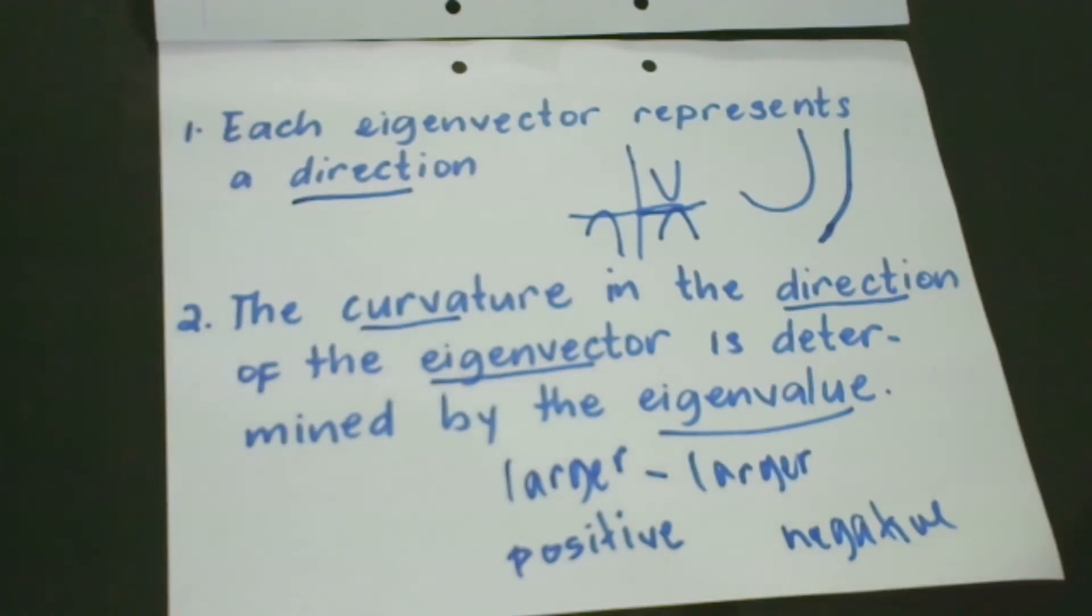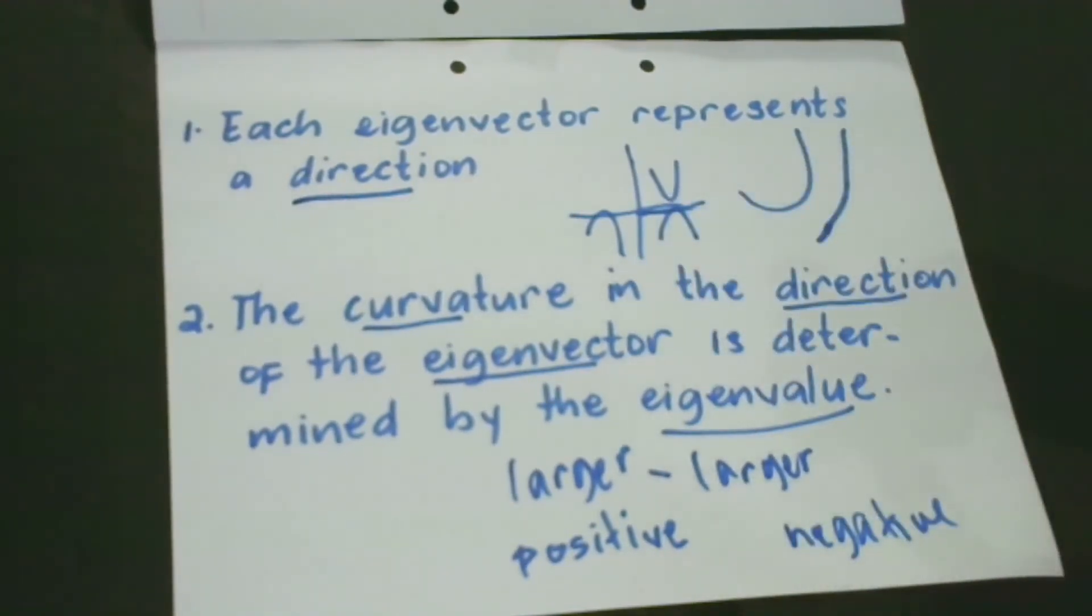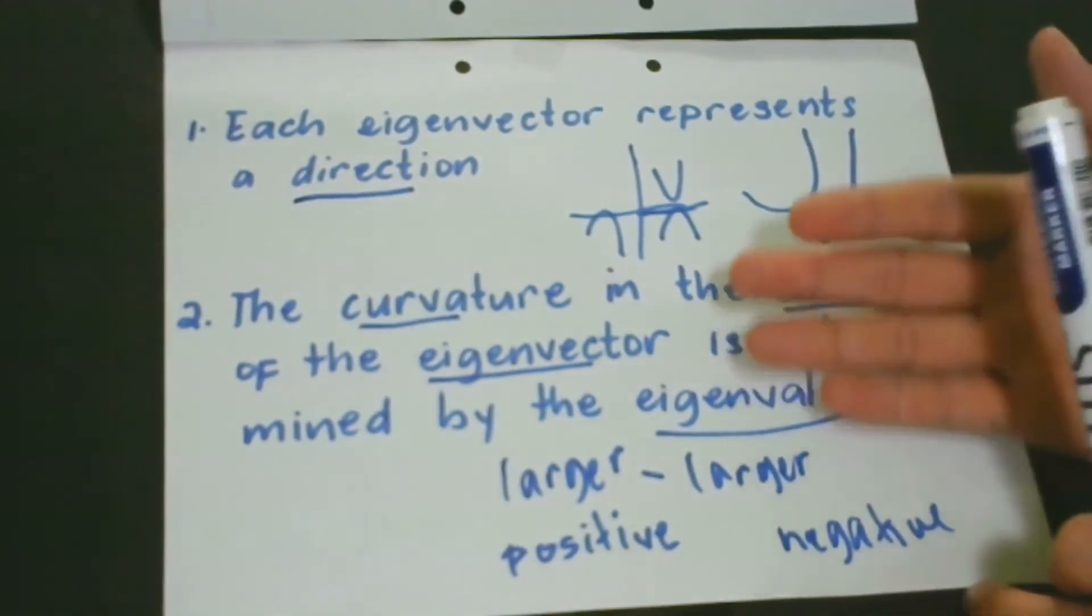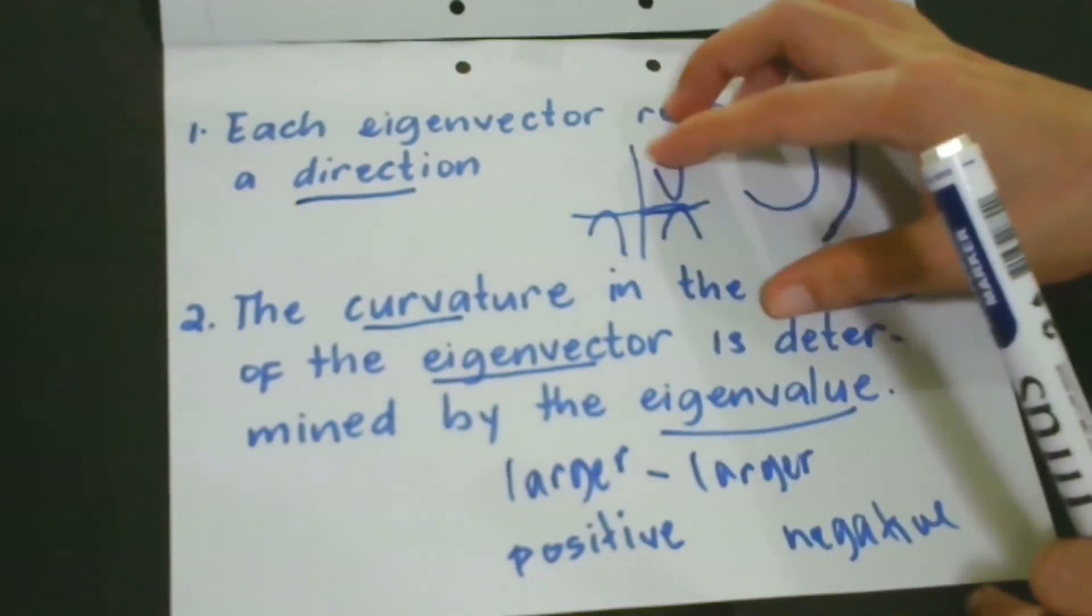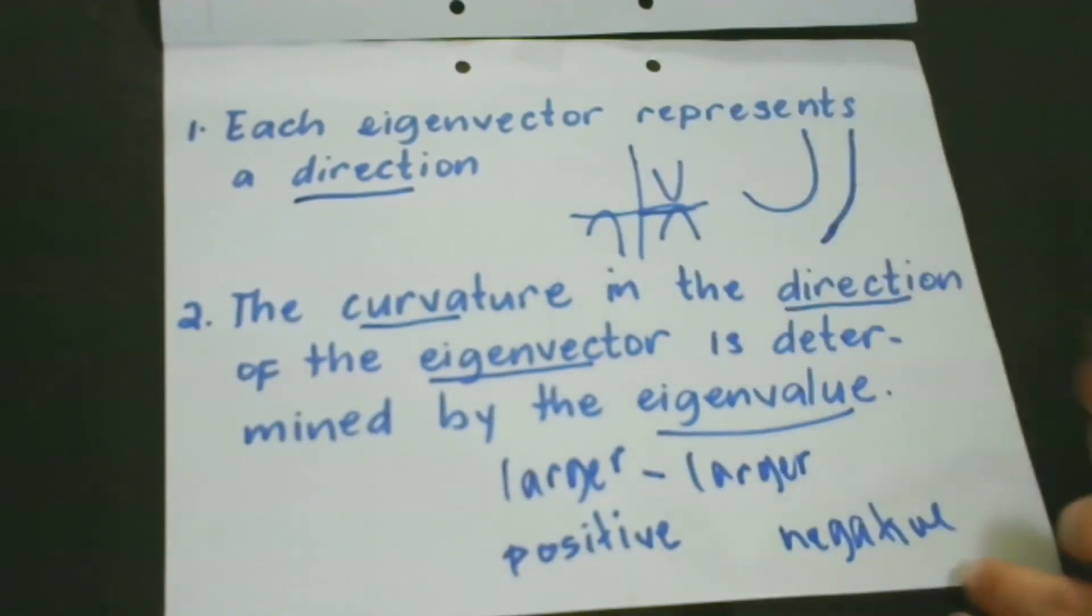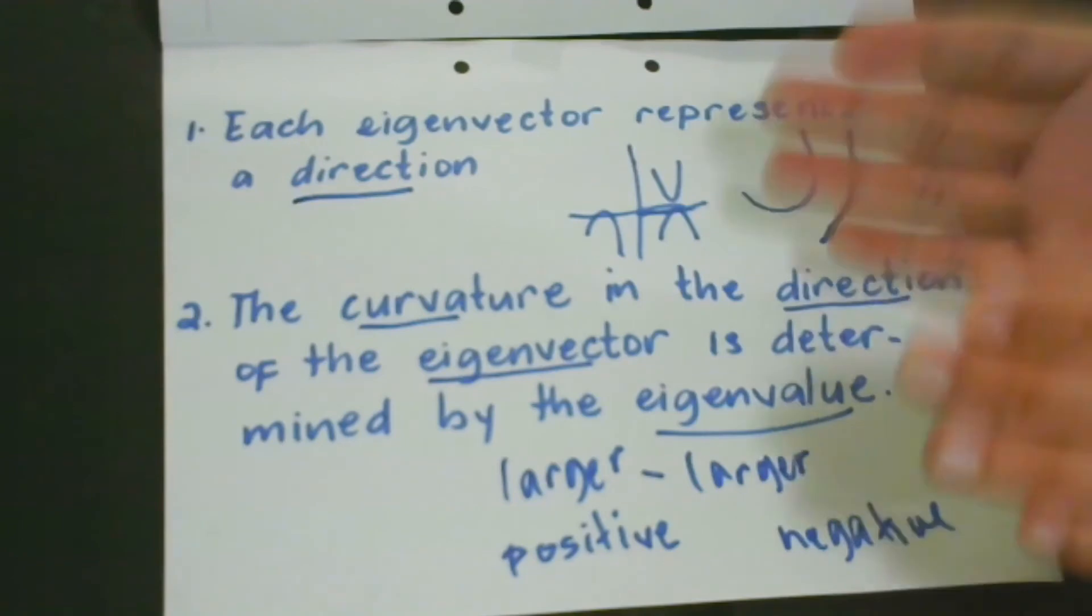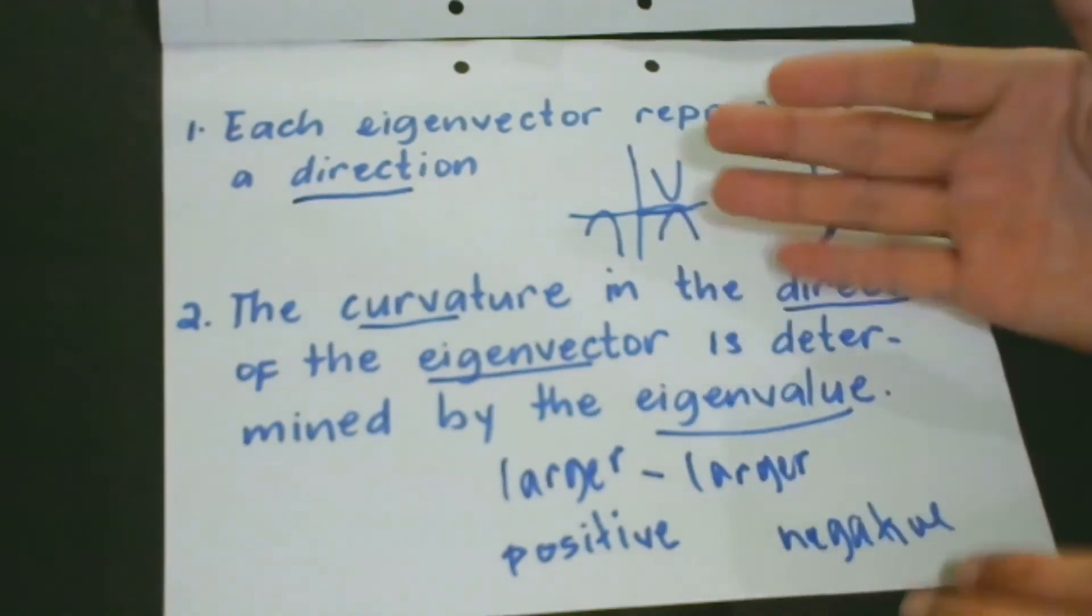With respect to the eigenvectors, the gradient only changes in the direction it points in. It means to say that all non-diagonal elements of the Hessian are zero for the eigenvectors. Remember the diagonal and the non-diagonal? So again, let me repeat that. It means to say that all non-diagonal elements of a Hessian are zero for the eigenvectors.